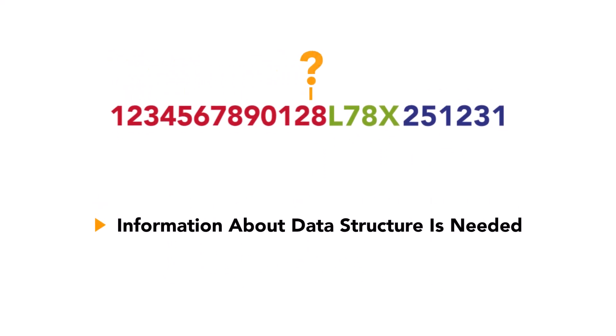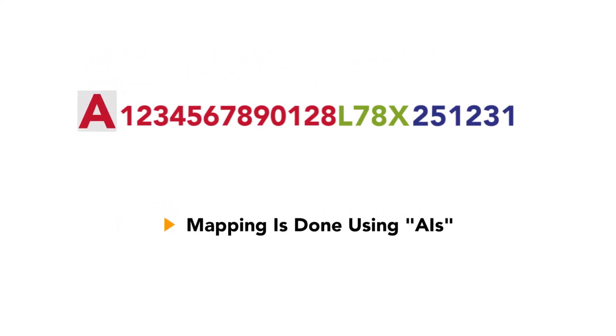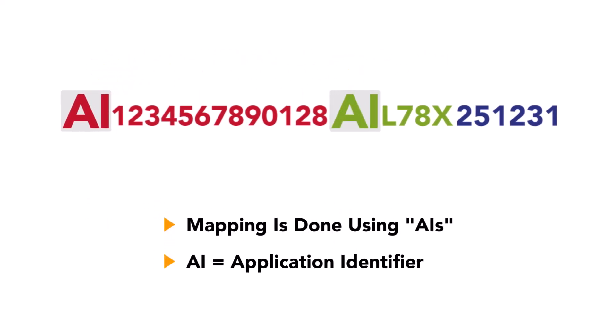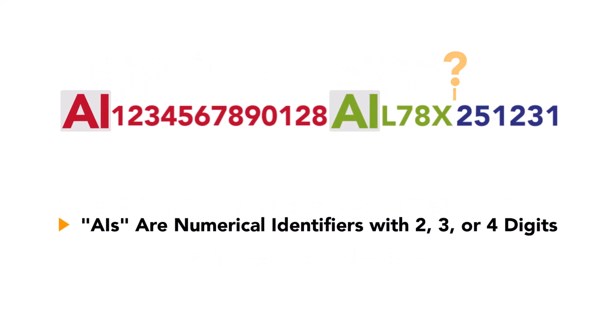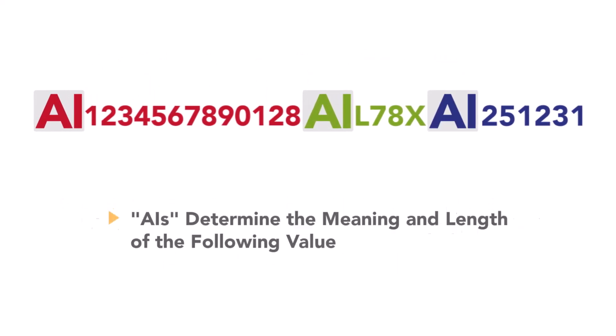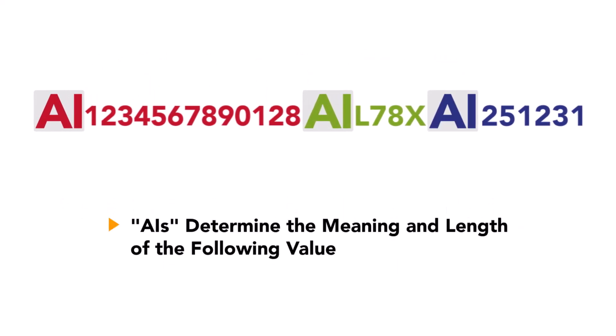To inform the reading application where exactly in the barcode data to find the corresponding information, mapping with AIs is done. AIs are two-, three-, and four-digit numerical identifiers that determine the meaning and length of the following values.